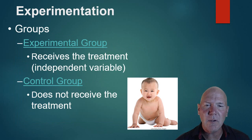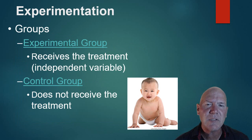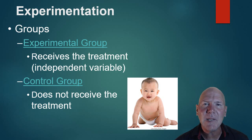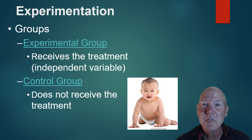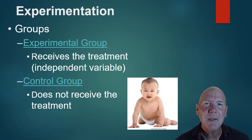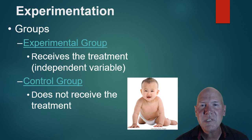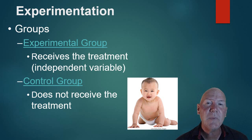Let's take an experiment as an example. We're testing some kind of a pill or treatment. We take our sample from the population and randomly assign them into groups: the experimental group and the control group. The experimental group receives the treatment — in this case, the pill — which is the independent variable. It's called independent because it is the one the researcher manipulates. The control group does not receive the treatment; they may receive a placebo. The experimental group gets the independent variable; the control group does not.